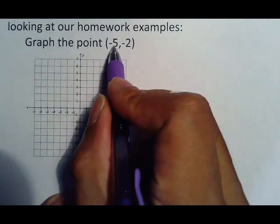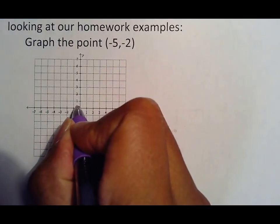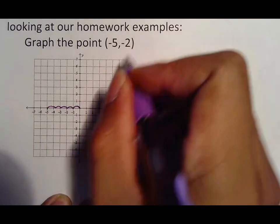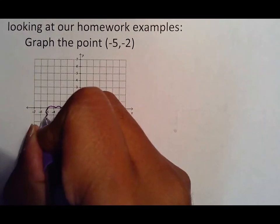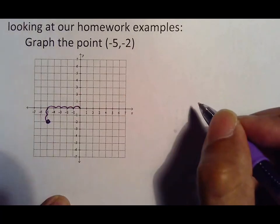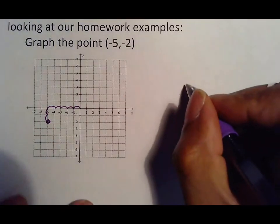Graph the point (-5,-2). Again the negative 5 means go 5 backwards: 1, 2, 3, 4, 5 and the negative 2 means go 2 down: 1, 2 which puts me right there. If you are doing this on paper.